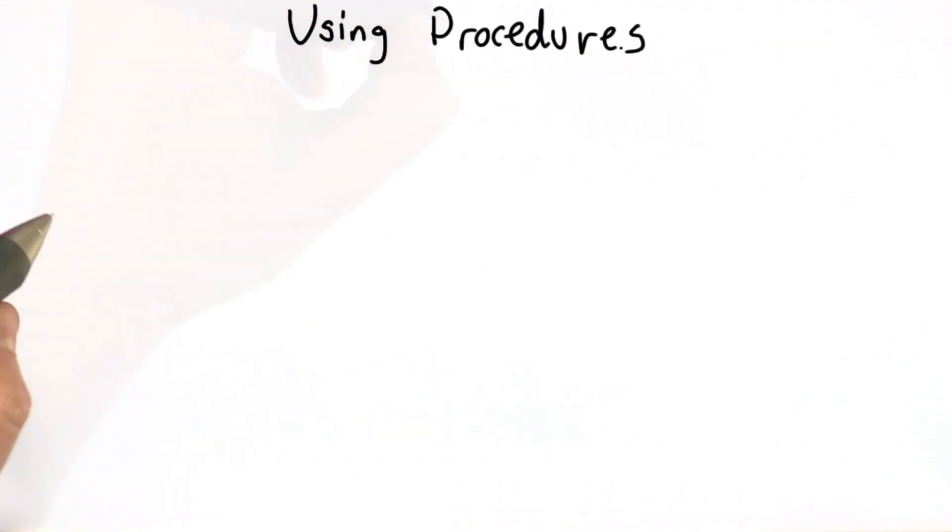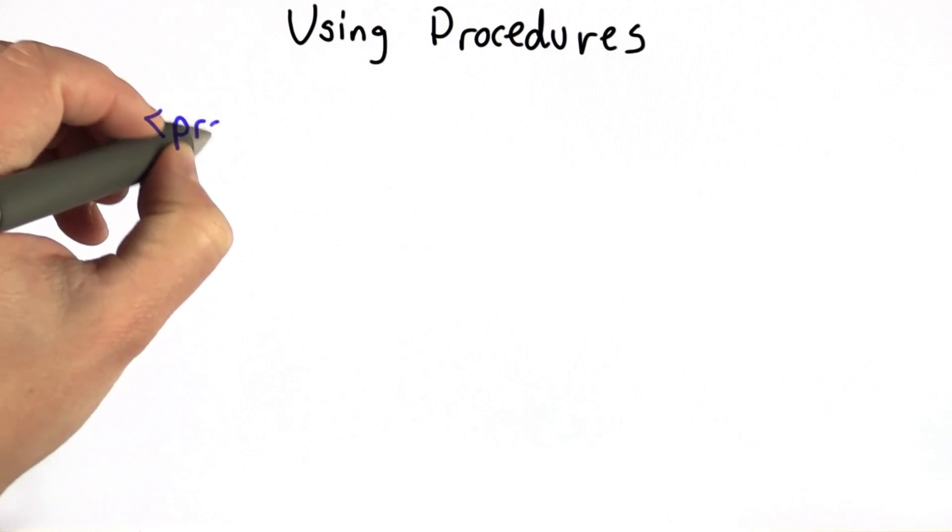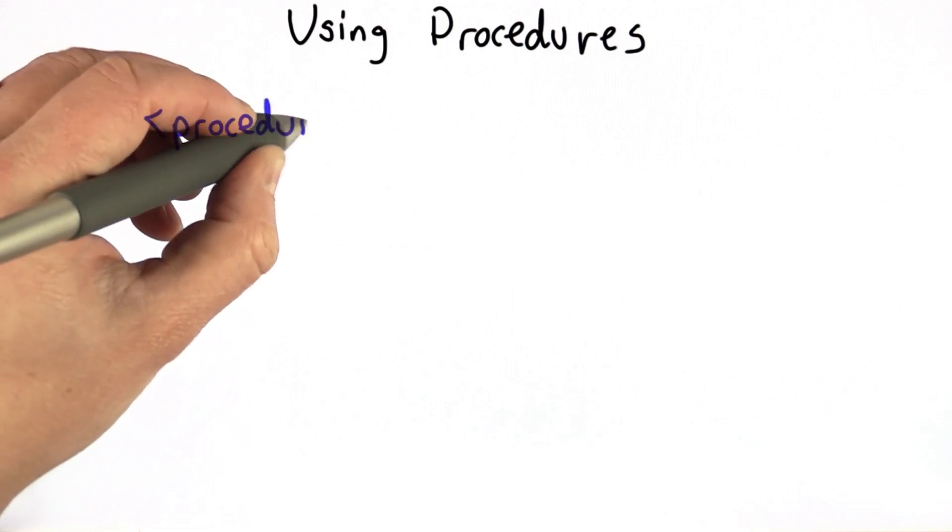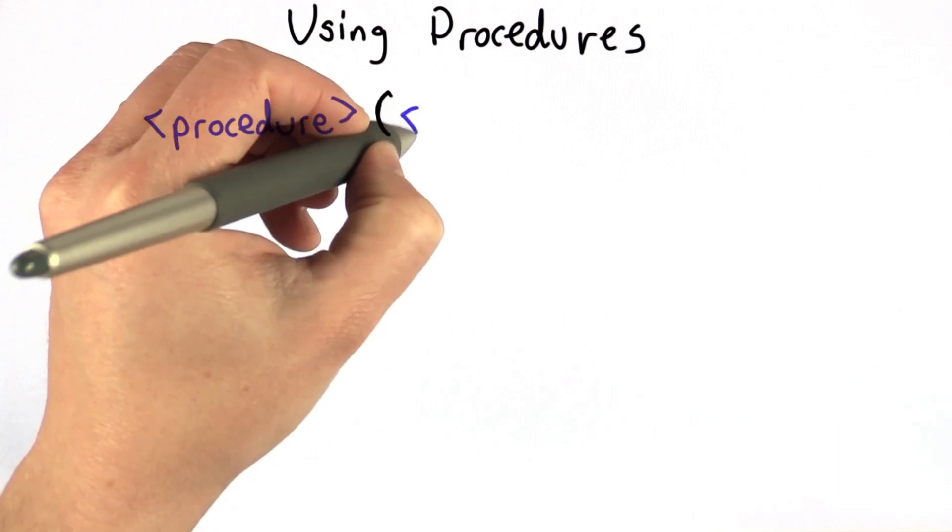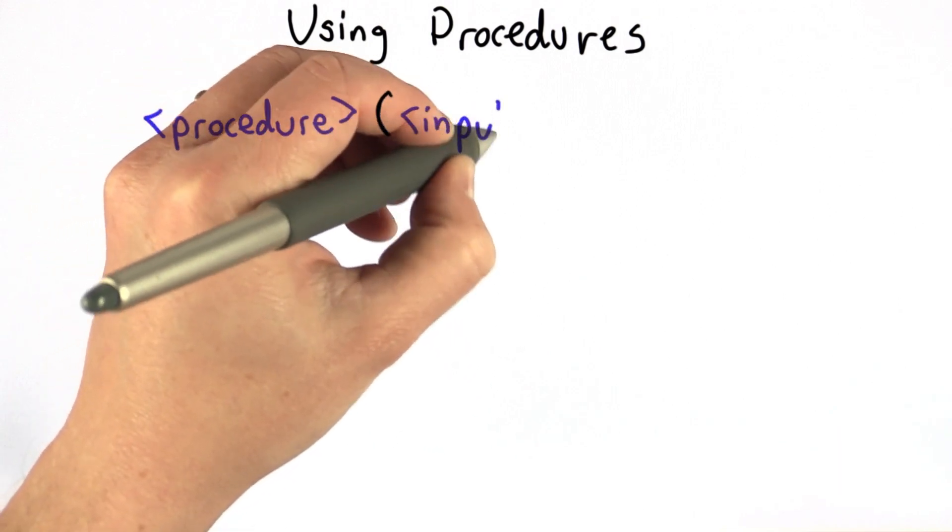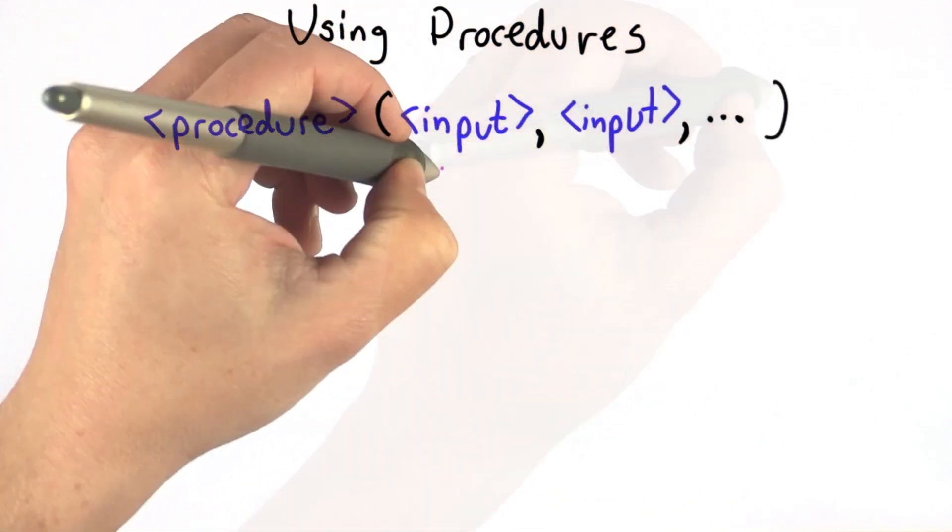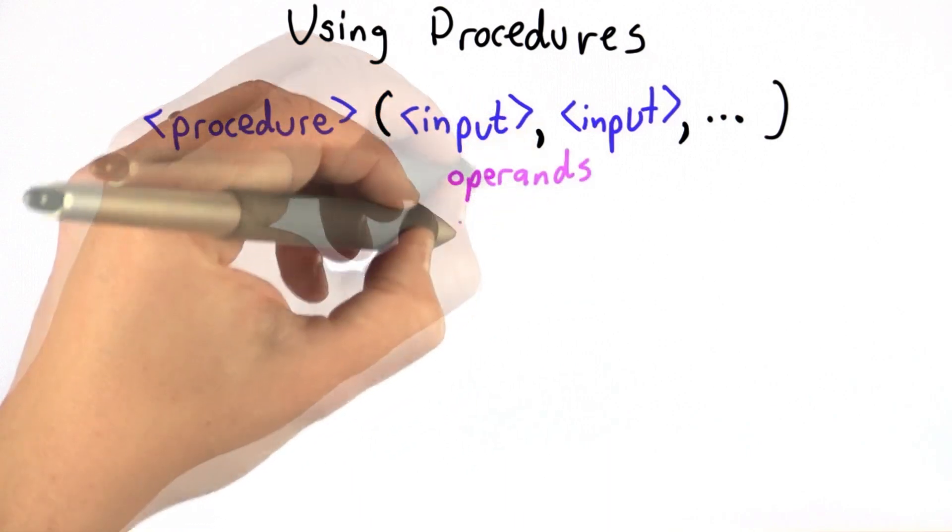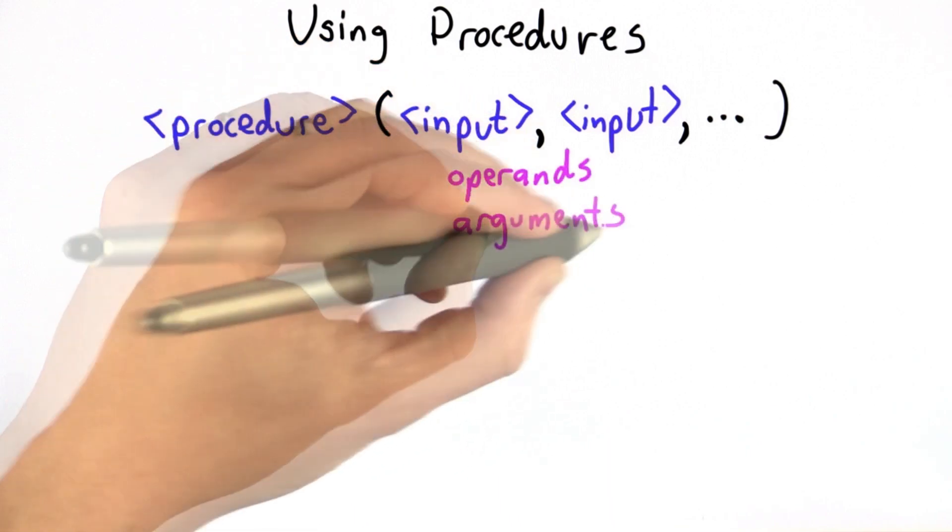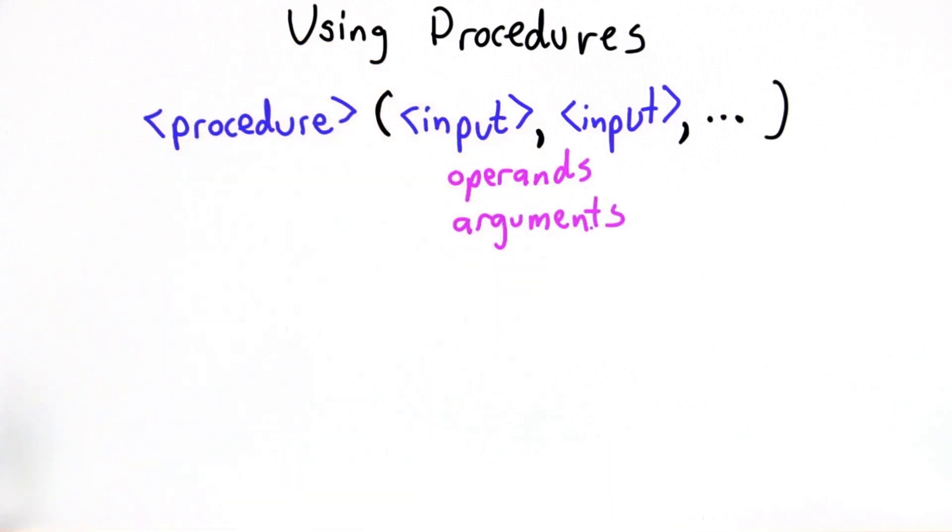So now we're going to learn how to use a procedure. The way to use a procedure, we need the name of the procedure, followed by a left paren, followed by a list of inputs. And there could be any number of inputs, but it has to match the number of inputs the procedure expects. These inputs are sometimes called operands, sometimes called arguments. But we're not going to argue about that. We're just going to call them inputs.